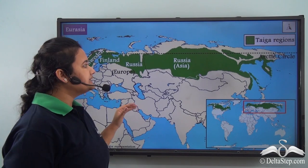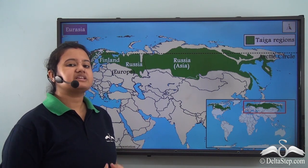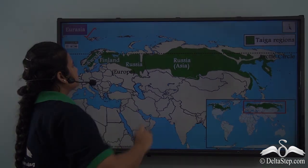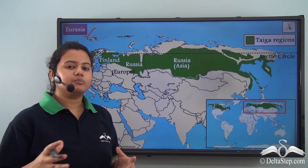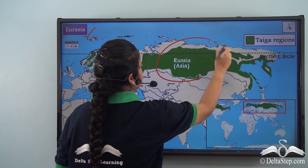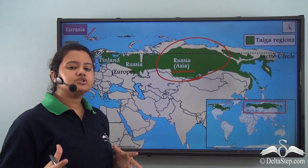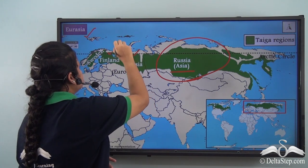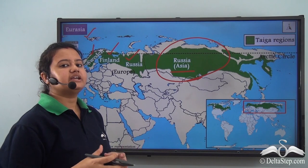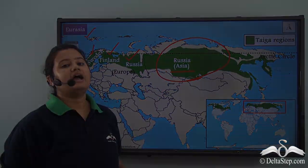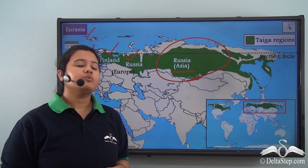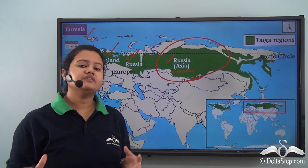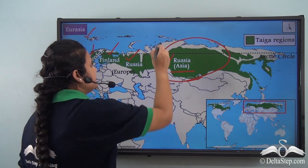This map shows the location of Taiga regions in Europe and Asia — together known as Eurasia. The biome covers a major portion of Russia, which spans both Asia and Europe. It also covers the northern parts of some European countries like Finland and Sweden. Since a major portion of Siberia, which is part of Russia, is covered with the Taiga region, another name for the Taiga region is the Siberian region.